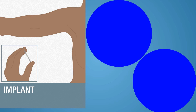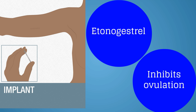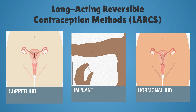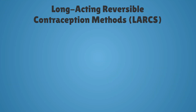The implant contains the progesterone etonogestrel and is a small plastic rod about the size of a matchstick that is inserted into the upper arm. It works by inhibiting ovulation. It is effective for up to three years and the most common side effect is irregular bleeding and spotting for the duration of the insertion. All LARC methods can be removed prior to the official end date, and there will be a rapid return of fertility after removal. LARCs are great for women who want optimal protection against pregnancy but who may or may not desire future fertility.